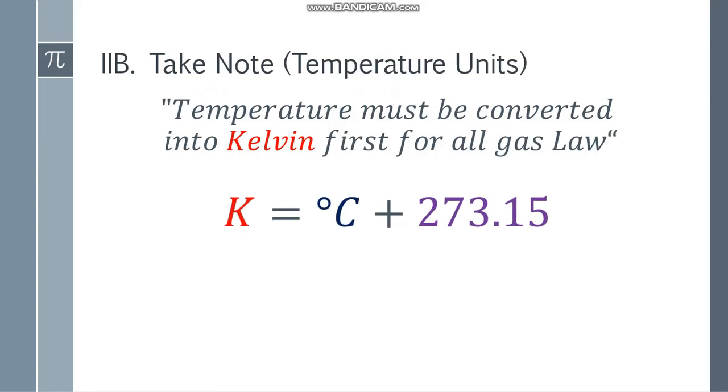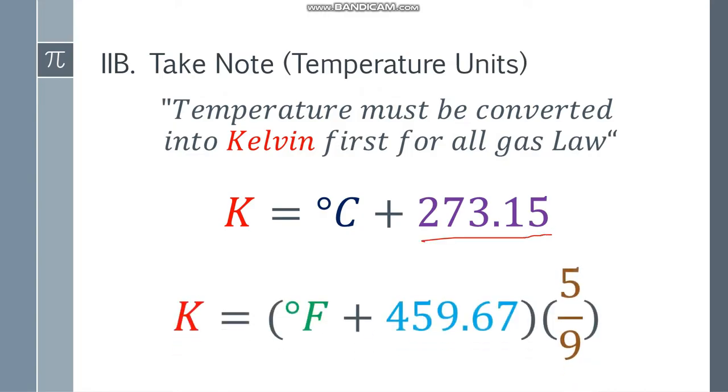Then convert back to Celsius or Fahrenheit if that's what's being asked. If it's Celsius, add 273.15. If it's Fahrenheit, add 459.67 to the Fahrenheit, then multiply by 5 over 9 to get Kelvin. In some textbooks, they just add 273, but I add 273.15 for more accuracy.